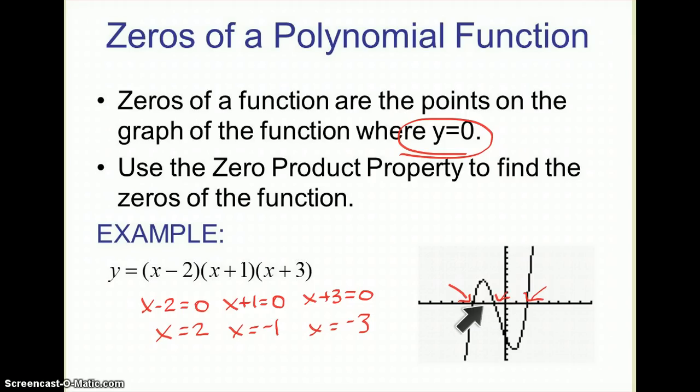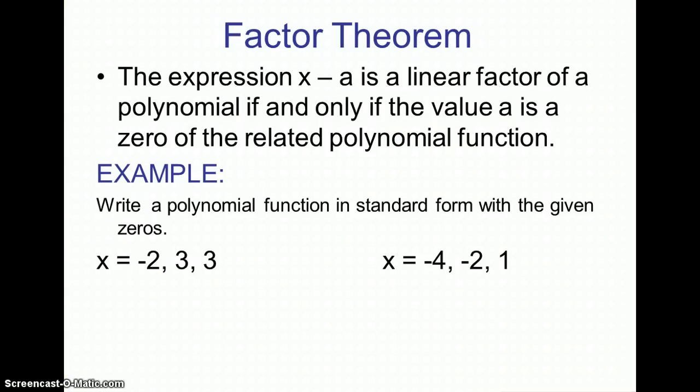So all three of those places where it crosses the graph on the x axis give me some indication of what these factors are going to be. So you can actually sort of determine what the equation of that polynomial would be if you know where the zeros are.